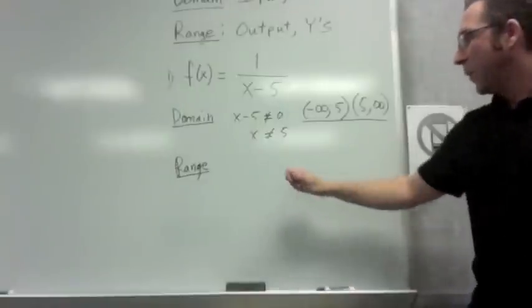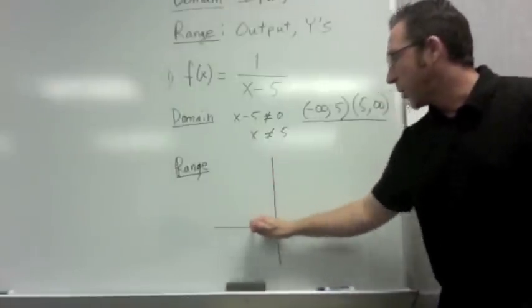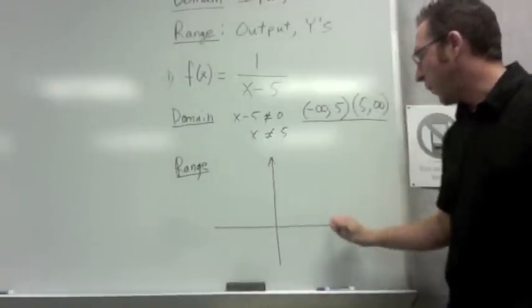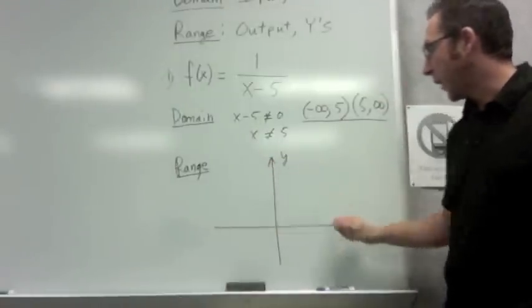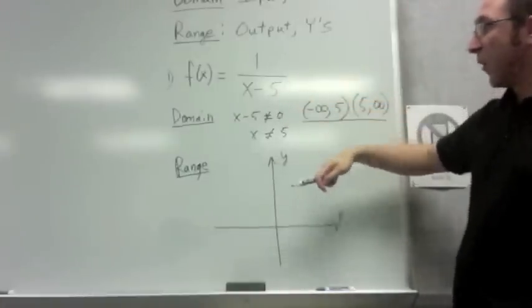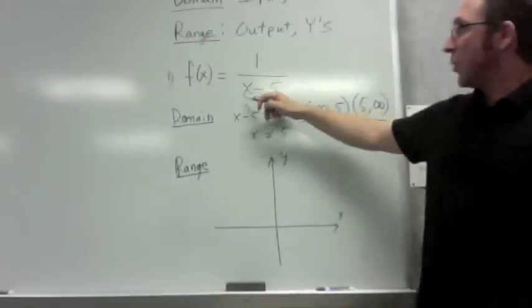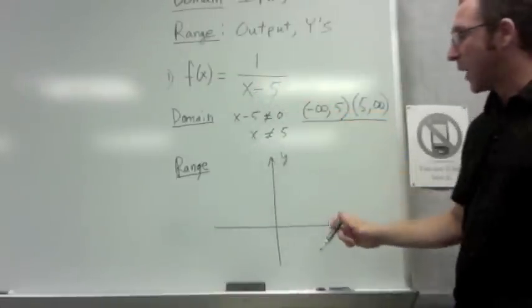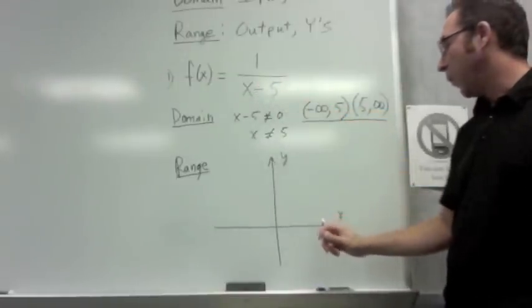For the range, again, what you want to do is you want to take a picture of this graph. You can graph it by hand or use the calculator depending on your skill level. So, when I look at this right here, if I want to graph it by hand, I choose 0 for my x to get a y-intercept at negative 1 fifth.